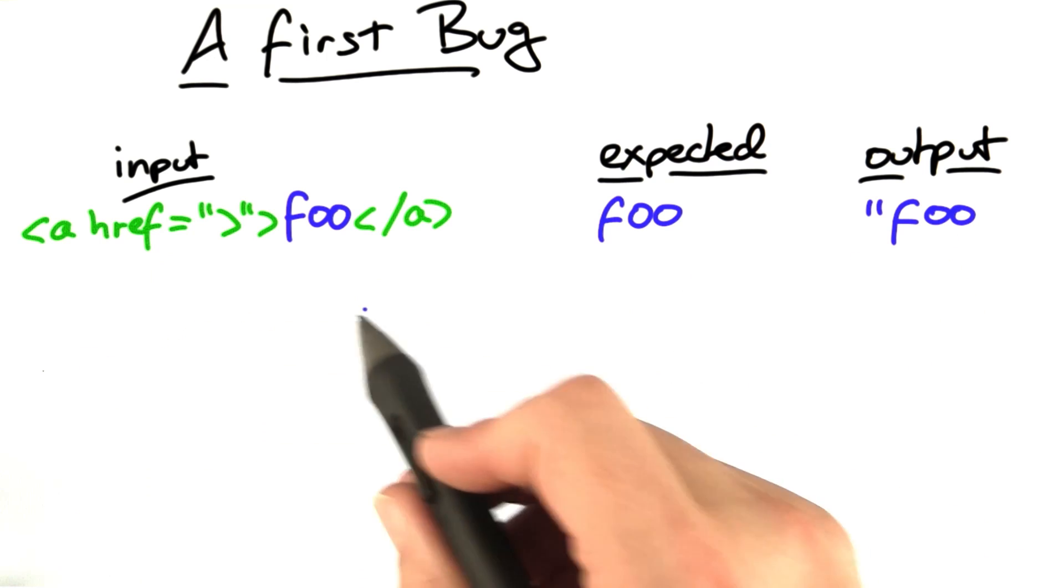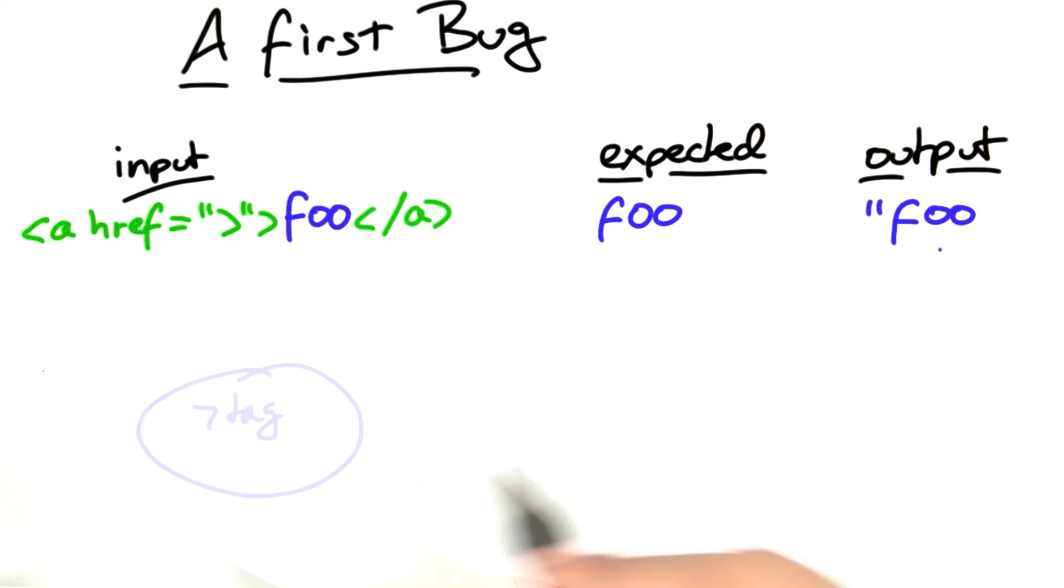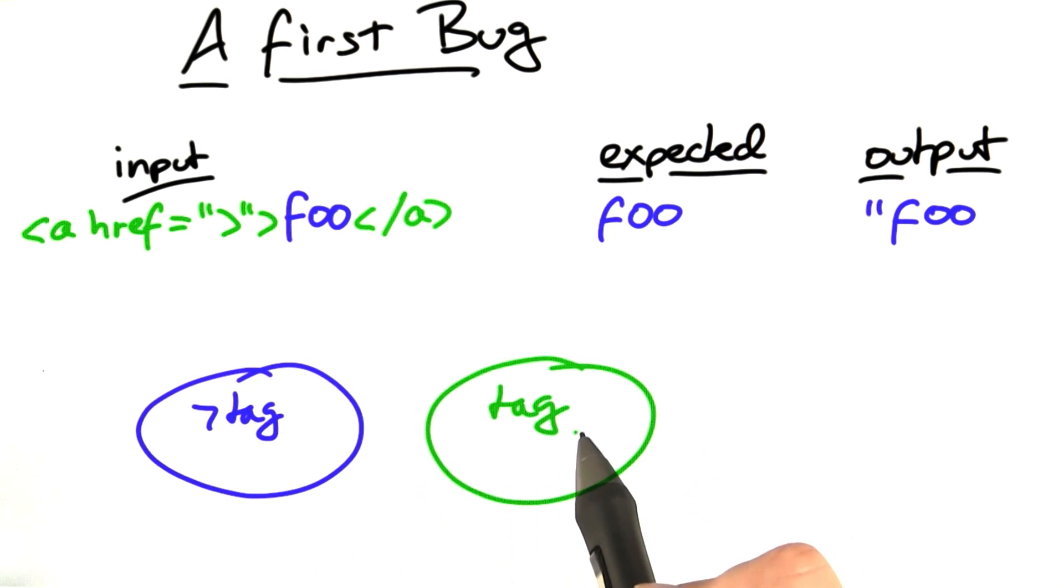The idea is as follows. Rather than having two states, one for regular text and one for HTML markup, we're going to have a third state,